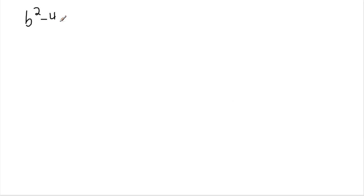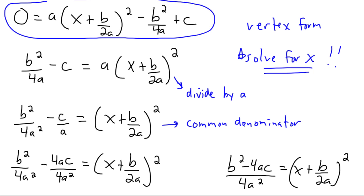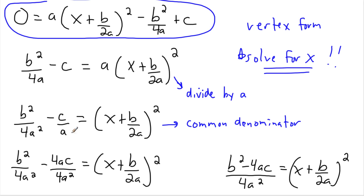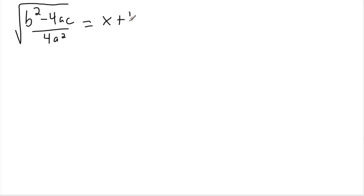So I had b squared minus 4ac over 4a squared, and I'm going to take the square root of that. That equals x plus b over 2a — because I took the square root, the square is no longer there. But remember, when you do square roots it's also possible to have a negative, so it has to be plus or minus. A negative number squared gives you the same positive result, so we have a plus and a minus. That's important.